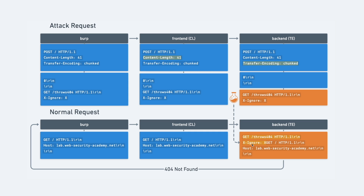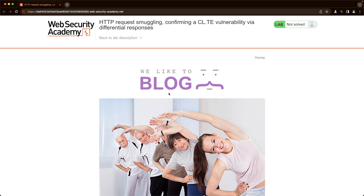It's also important to note that this is called a differential response because our normal GET request for the front page would normally return a 200 OK from the backend server. But because the backend is poisoned with the prefix for a resource that doesn't exist, we get back a 404. That differs from the 200 OK we'd normally expect — and that's why it's called a differential response. Now let's see what that looks like in the lab.